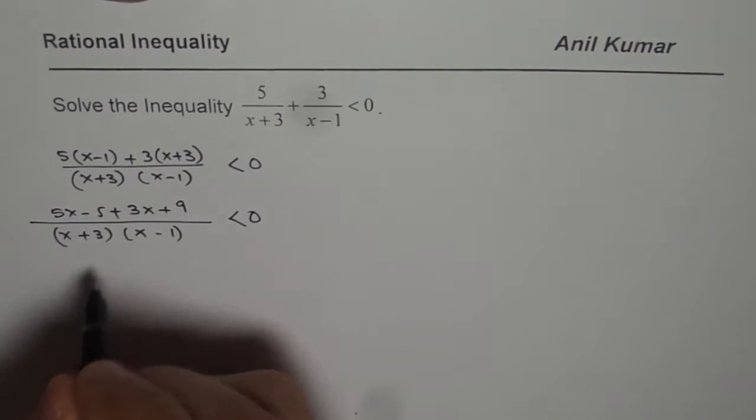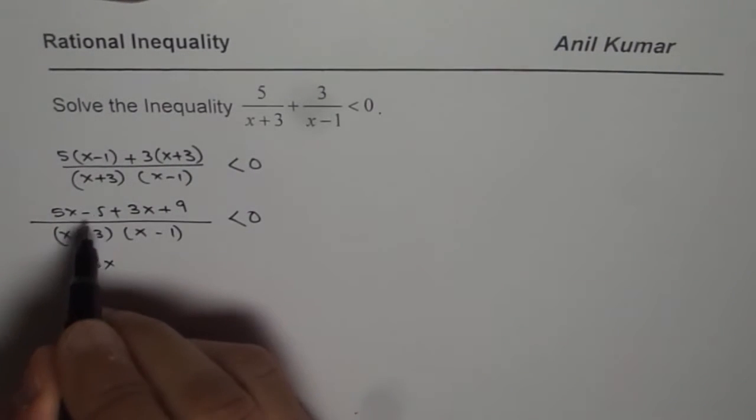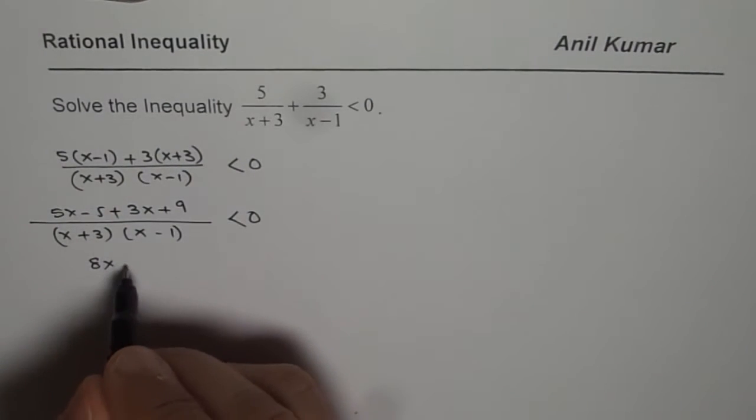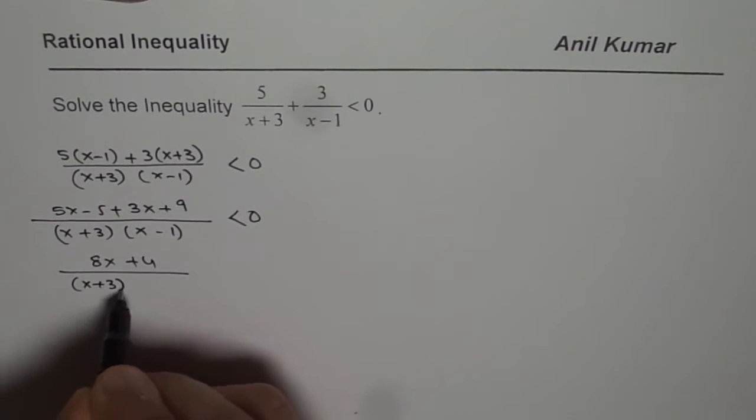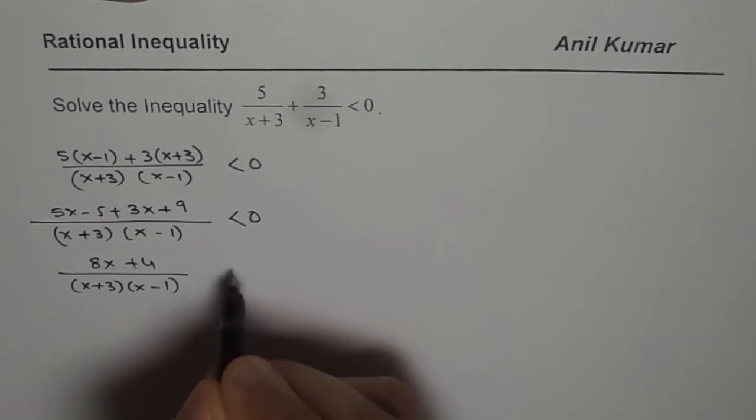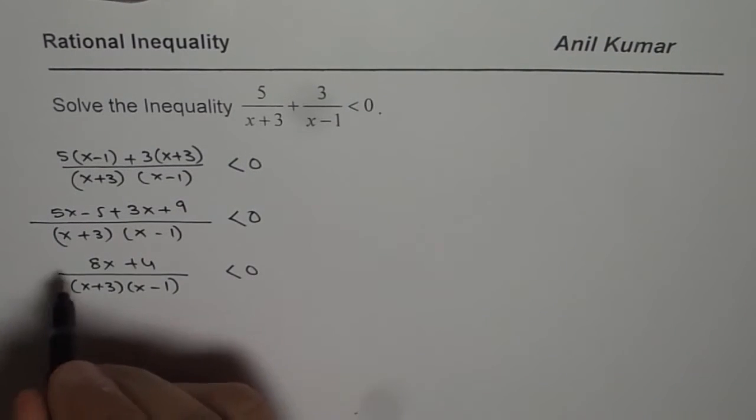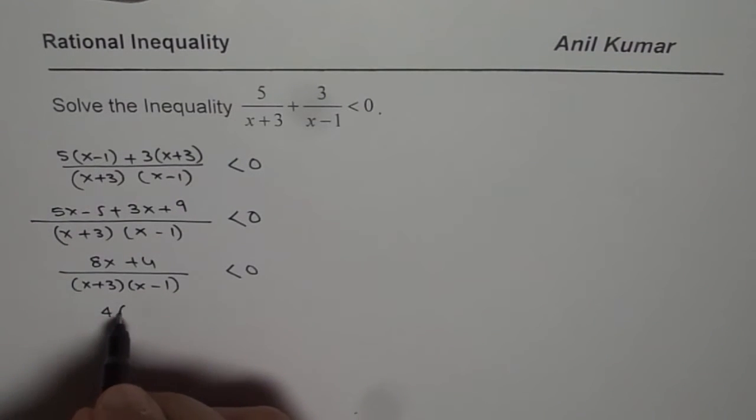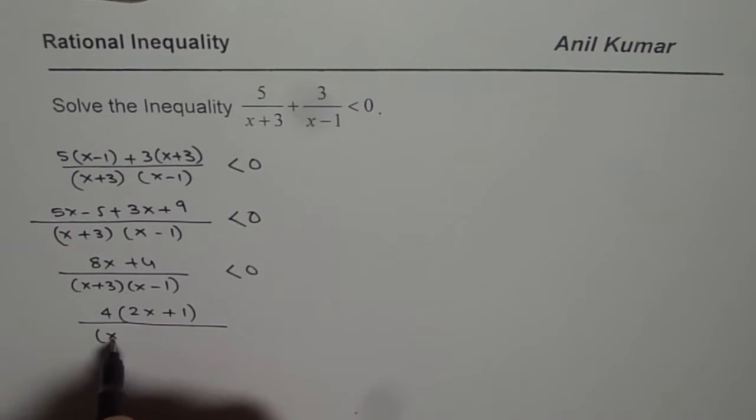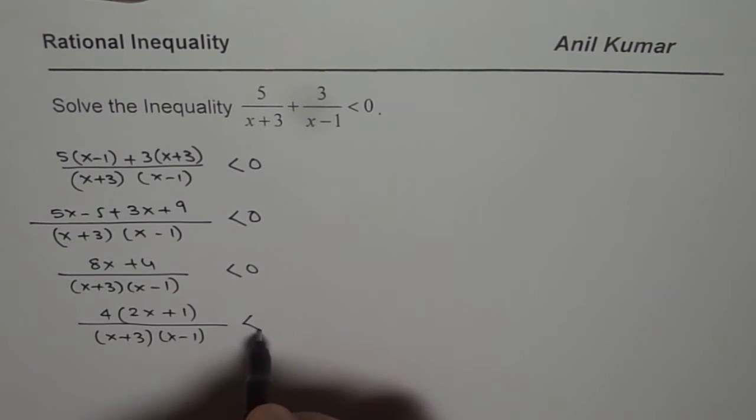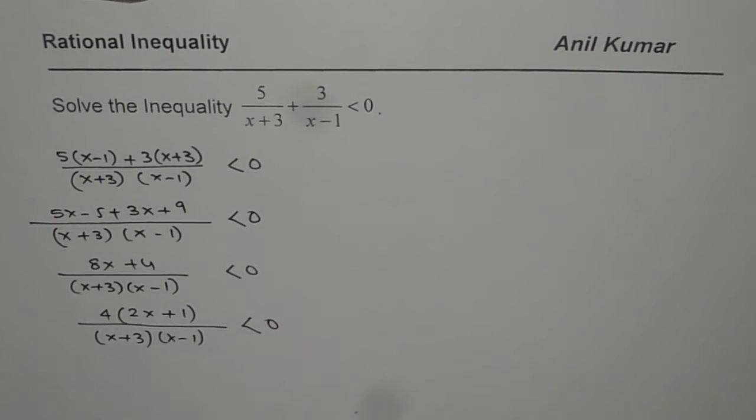Combining the terms in the numerator we get 8x minus 5 plus 9 is plus 4 divided by x plus 3 times x minus 1 which is less than 0. Now we can take 4 common, we get 2x plus 1 in the numerator, x plus 3 times x minus 1 in the denominator, less than 0.